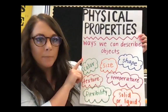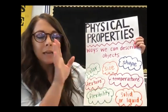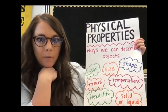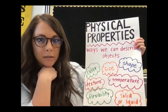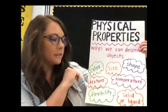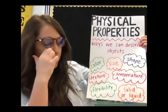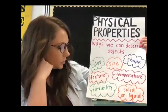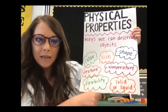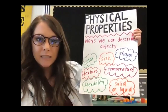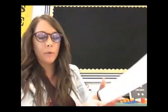Physical properties are just anything we can describe about an object. We could describe its color, its size, its shape, its texture, temperature, flexibility, its state of matter — which is solid, liquid, or gas. All of those are physical properties, or ways we can describe objects.